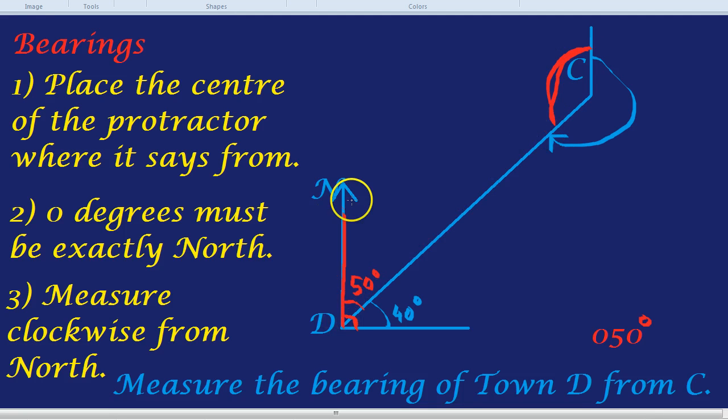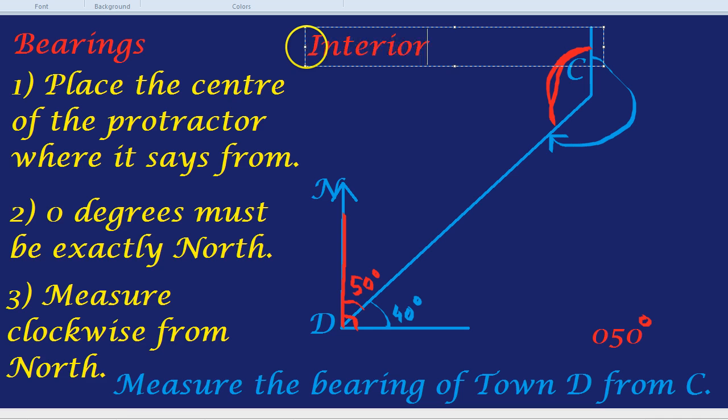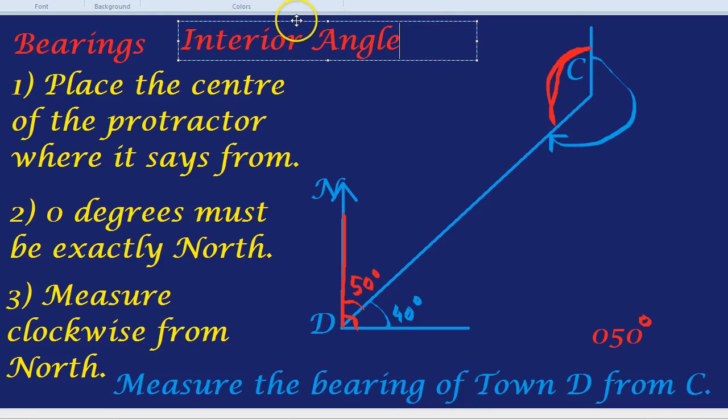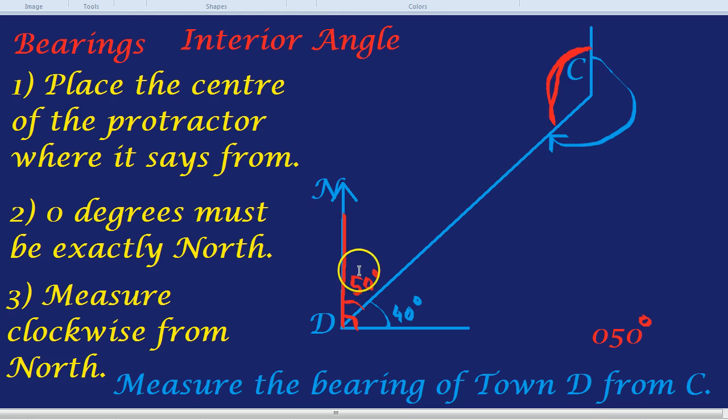the angle here between two parallel lines I'm going to be using the interior angle rule which I'll talk about again in another video. But interior angles between two parallel lines add up to 180. So, if that's 50 degrees this must be 130 degrees.